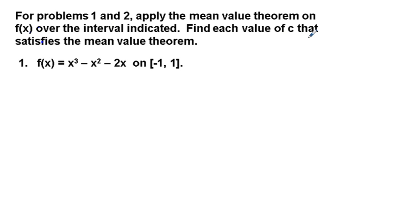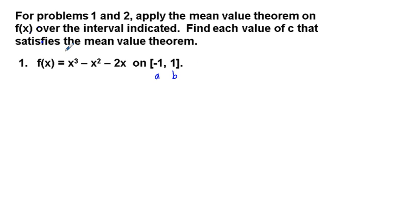Find each value of c that satisfies the mean value theorem. For problem 1, we have f(x) equals x cubed minus x squared minus 2x on the interval from negative 1 to 1. I'm going to label negative 1 as a and 1 as b. Is this function going to be continuous over this interval? Yes — polynomial functions are continuous and differentiable for all real numbers.